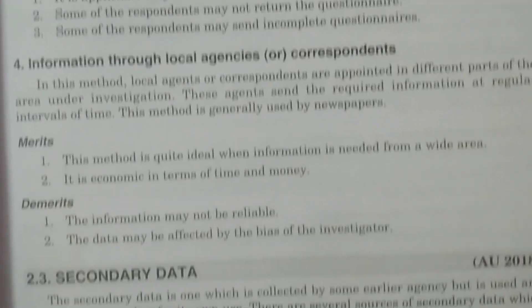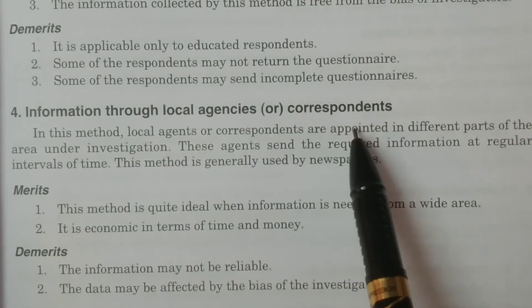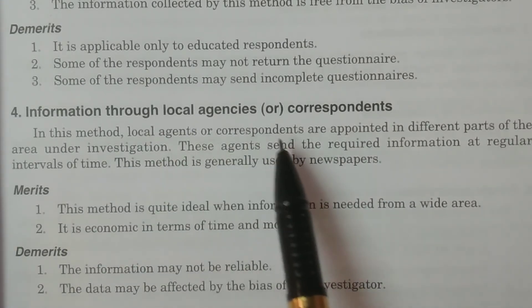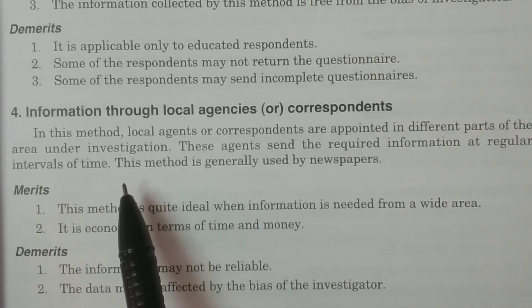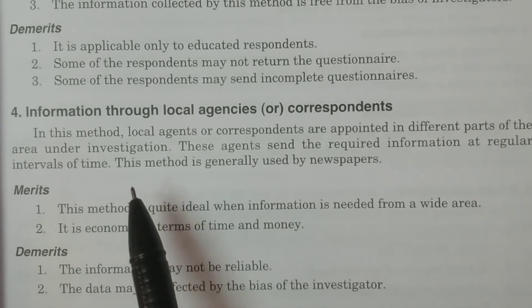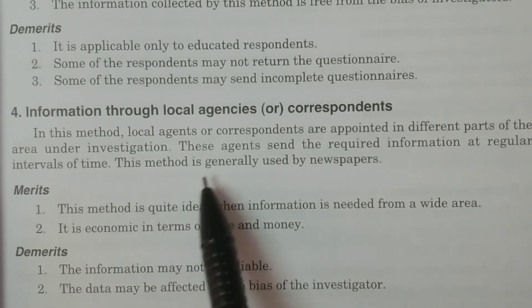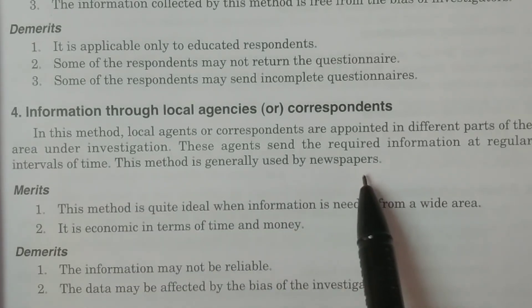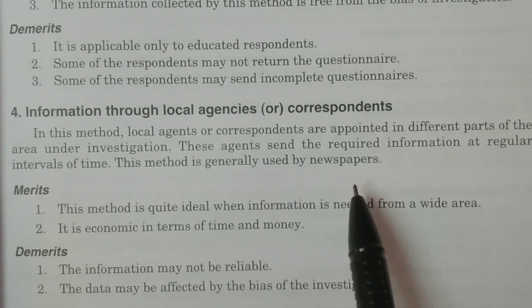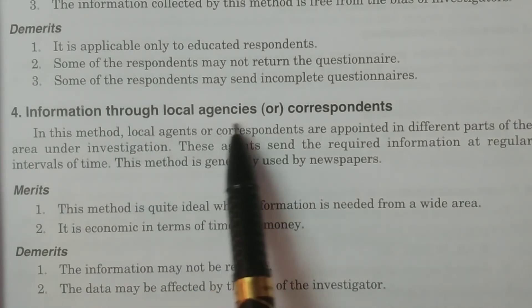The fourth method is information through local agents or correspondence. In this method, local agents or correspondents are appointed in different parts of the area under investigation. These agents collect the required information and send it at regular intervals of time to the organization. This method is generally used by newspapers.